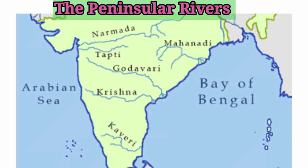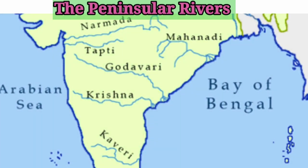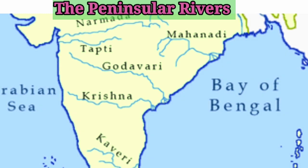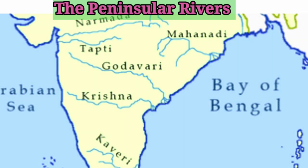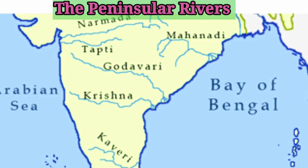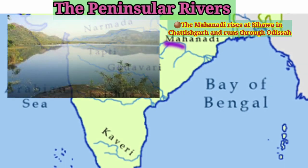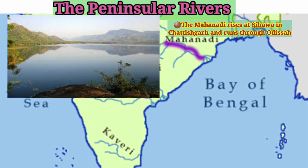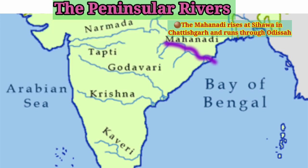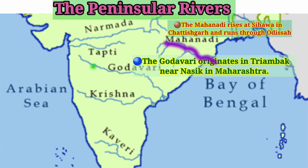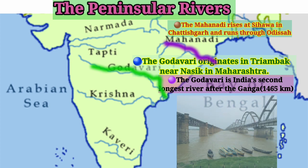The Peninsular rivers in India take birth in Peninsular India. Mahanadi takes birth at Sihawa in Chhattisgarh, flows through Odisha, and finally merges into the Bay of Bengal. Godavari rises at Trimbakeshwar near Nashik in Maharashtra. Godavari is the second longest river in India with 1465 km length after the River Ganga.